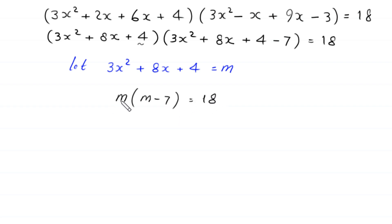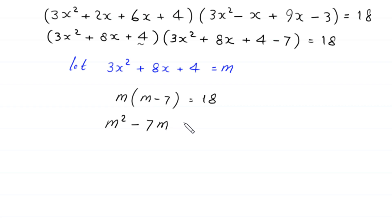We distribute: m times m will become m squared, and m times negative 7 will become negative 7m. Moving 18 to the left hand side gives m squared minus 7m minus 18 is equal to 0.